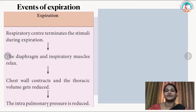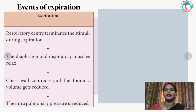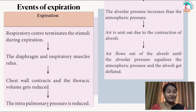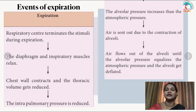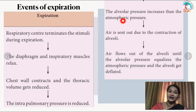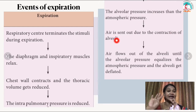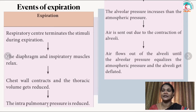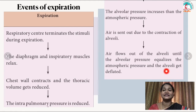During expiration, the respiratory center terminates the stimulus. The diaphragm and inspiratory muscles relax; the intercostal muscles relax and the chest wall contracts, reducing thoracic volume. The alveolar pressure increases above atmospheric pressure, which pushes air outside. Air flows out of the alveoli until the alveolar pressure equalizes the atmospheric pressure, and the alveoli become deflated. This is how inspiration and expiration take place in our body.